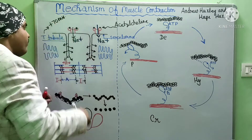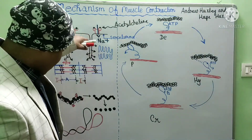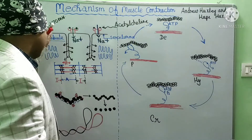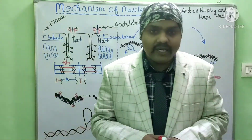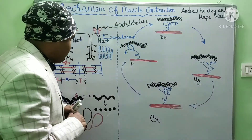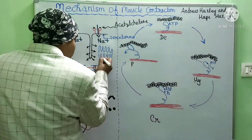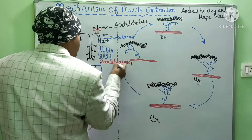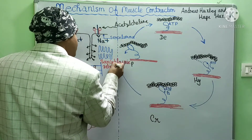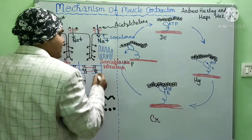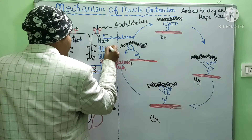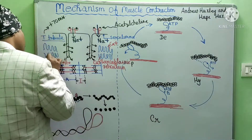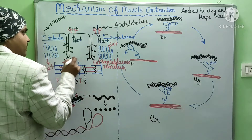This stimulus will enter into the deep of the muscle cell with the help of the T-tubule, which stands for transverse tubule. When the stimulus enters deep into the muscle cell, there are specialized smooth endoplasmic reticulum called sarcoplasmic reticulum. The sarcoplasmic reticulum has a lot of stored calcium ions, so when it accepts the stimulus, a lot of calcium ions will be released.